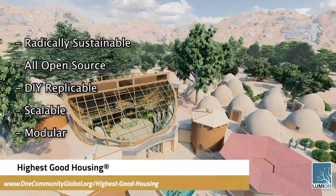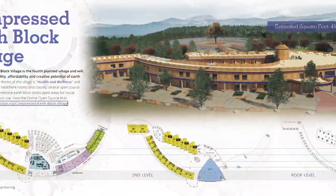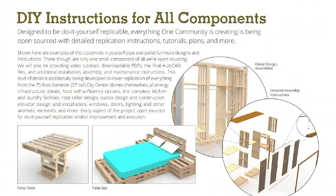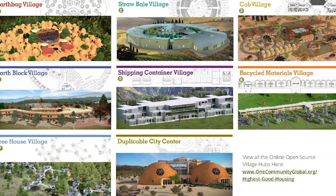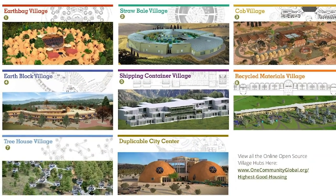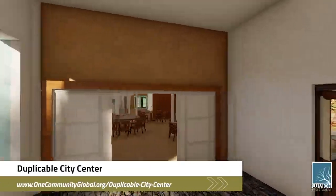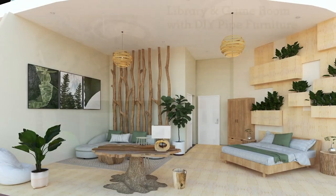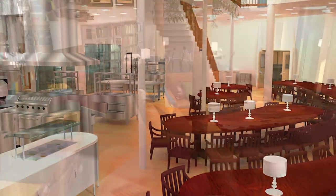The One Community approach to highest good housing is eco-artistic home building that is affordable, sustainable, do-it-yourself, duplicable, resource and space efficient, and consists of seven different sustainably constructed village models. One Community is also creating an open source duplicable city center designed to be LEED Platinum certified, providing 12 guest rooms, dining for over 150 people, and laundry and recreation space for over 300 people — all while saving money, time, space, and resources.